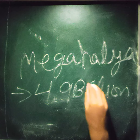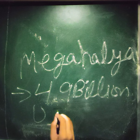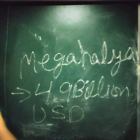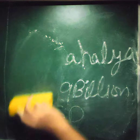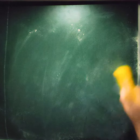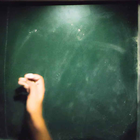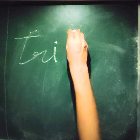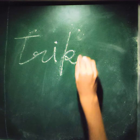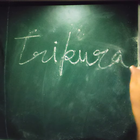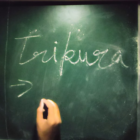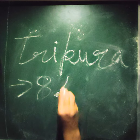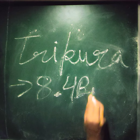The last state of this zone is Tripura, and the total GDP of Tripura state is 8.4 billion US dollars.